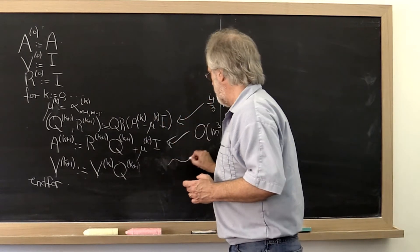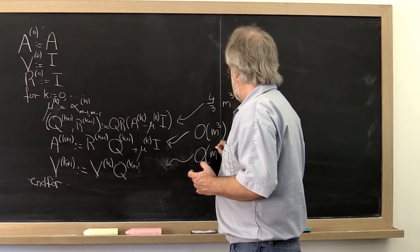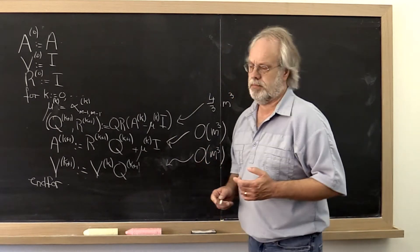If we're sloppy here, we might as well be sloppy there. So we'll just say it's order m cubed as well.